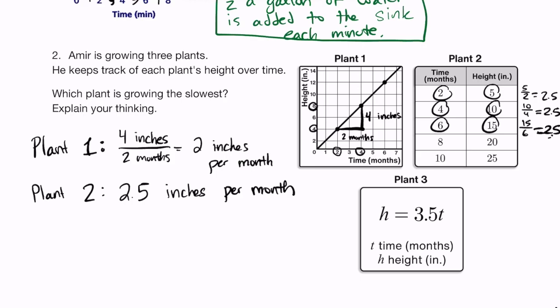Finally, for plant 3 we have an equation. The equation form is harder conceptually, but easiest for finding the rate of change. In a proportional relationship, the rate of change is just the number multiplying x. Here t is x — time in months — so plant 3 is growing 3.5 inches per month.